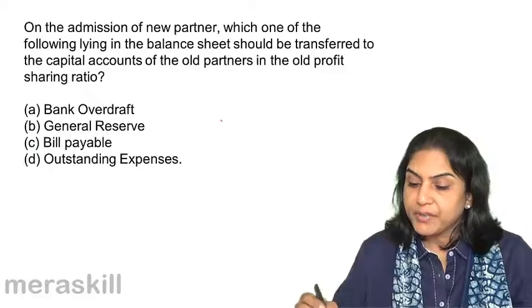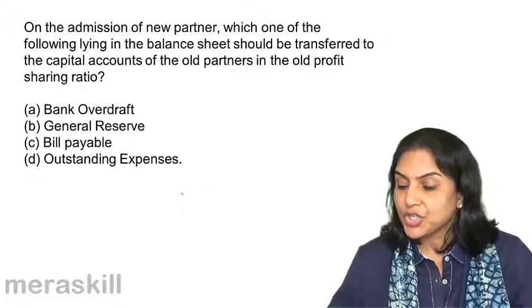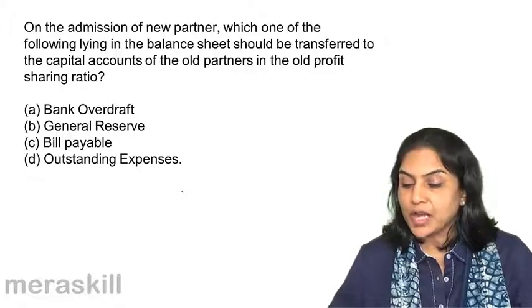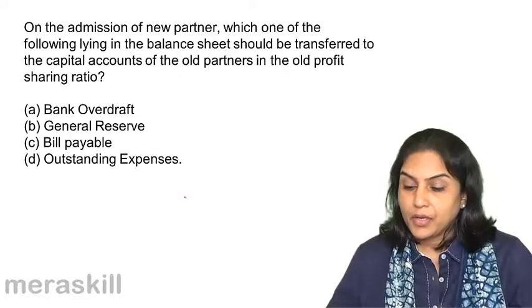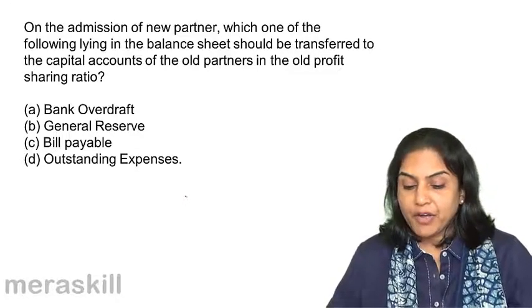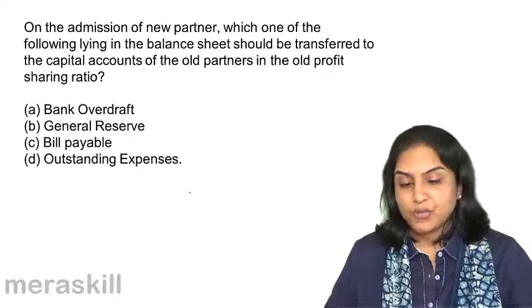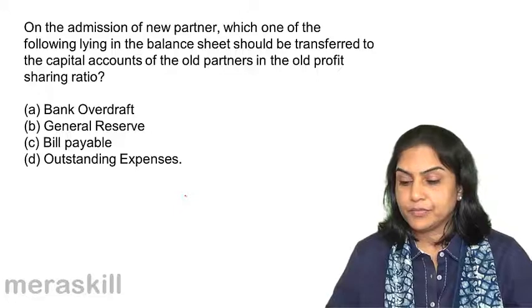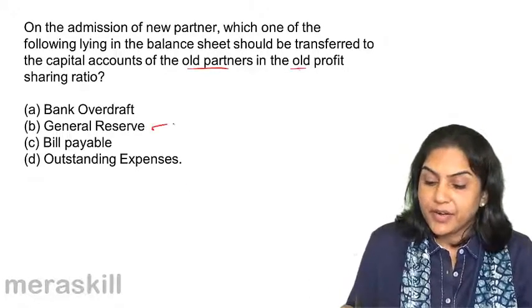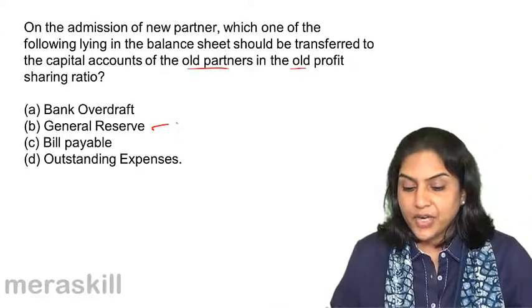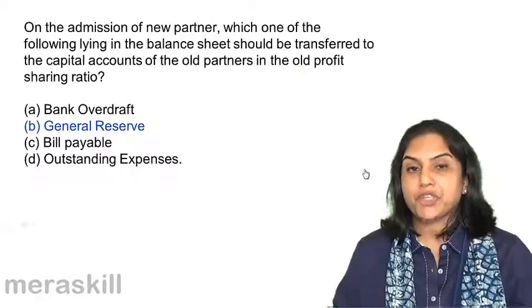Next question. On the admission of a new partner, which one of the following items lying in the balance sheet should be transferred to the capital accounts of the old partners in the old profit sharing ratio? A. Bank overdraft. B. General reserve. C. Bills payable. D. Outstanding expenses account. The general reserve should be transferred to the old partners in the old profit sharing ratio. Correct answer: B.